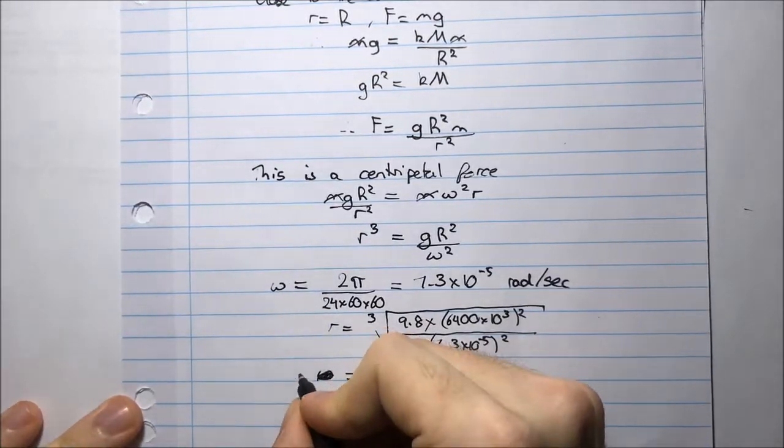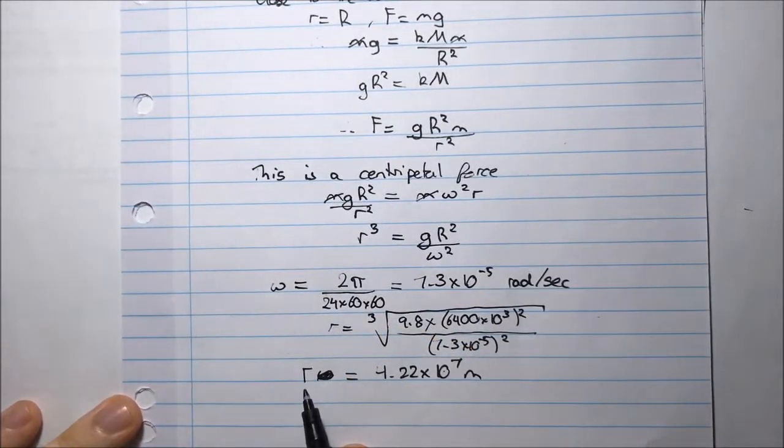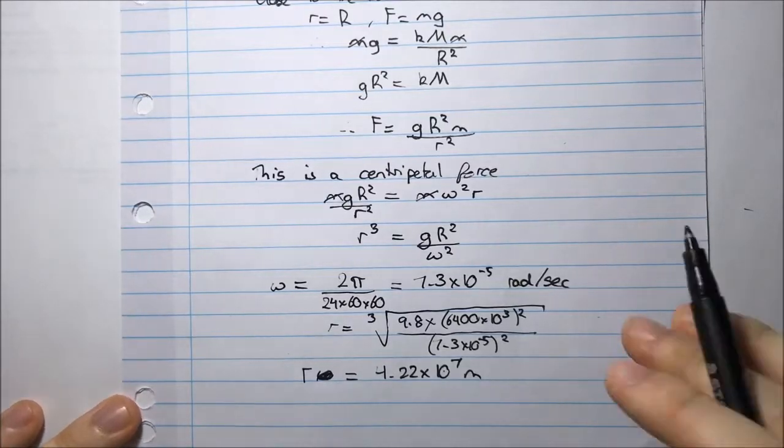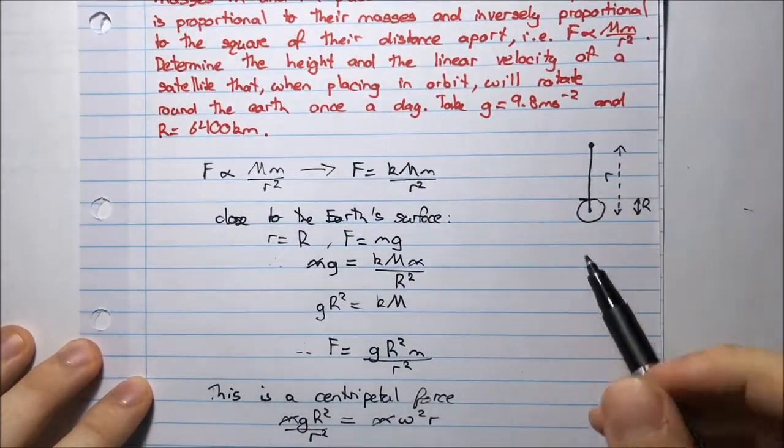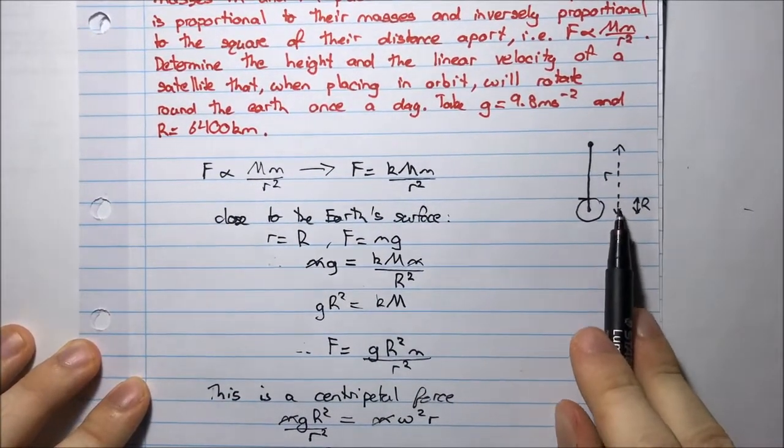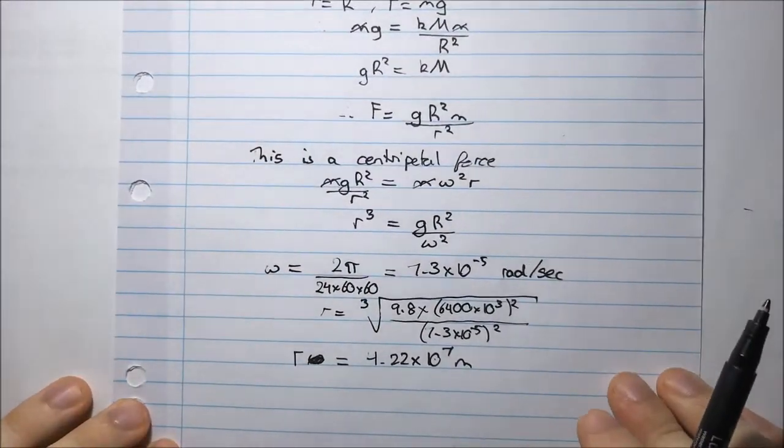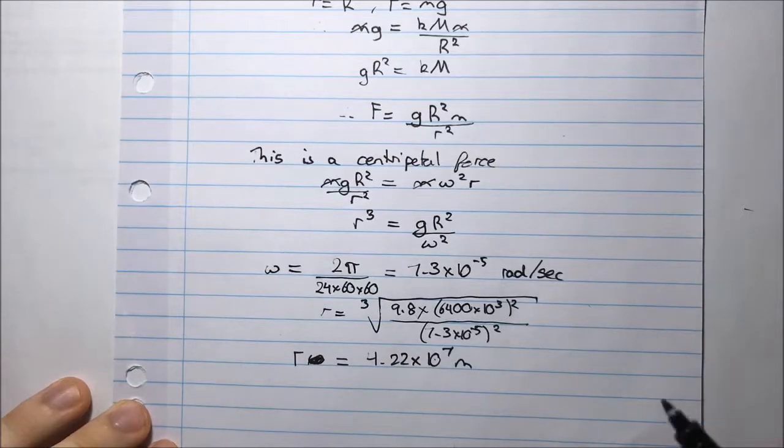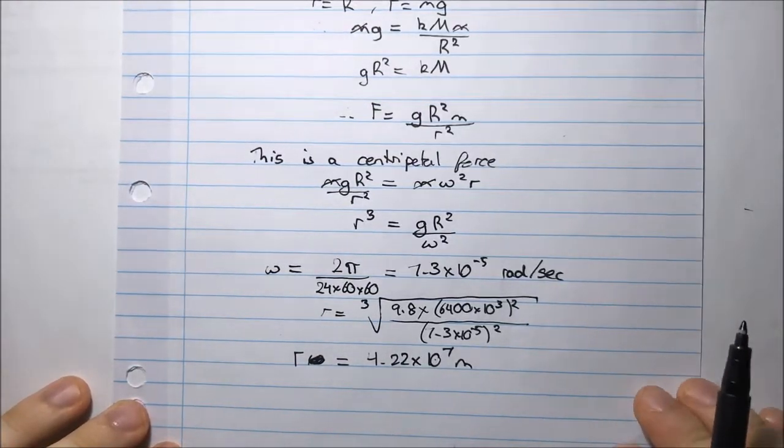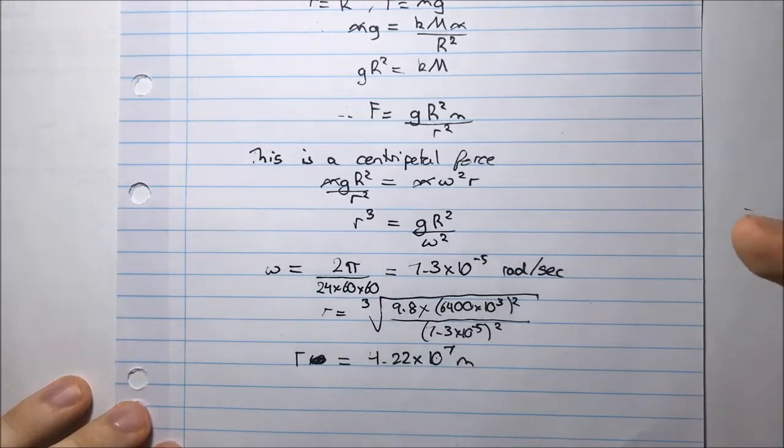That is the distance from the center of the Earth. From this diagram, we said that little r was the distance from the center of the Earth to the satellite. Now, that's nice, but let's work out what the height is. When we refer to height, we're talking from the surface of the Earth, because clearly we're standing on the surface of the Earth.